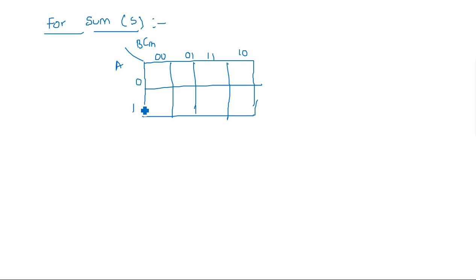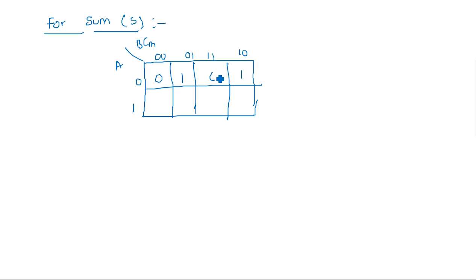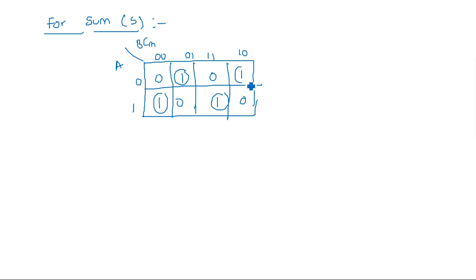The K-map columns follow Gray code: 00, 01, 11, 10 — and the rows are 0 and 1. Filling in the map: the 1s appear at positions corresponding to the truth table output. However, all the 1s are individually present and diagonally placed — we cannot map diagonally. So we have to map them individually, giving four min terms.